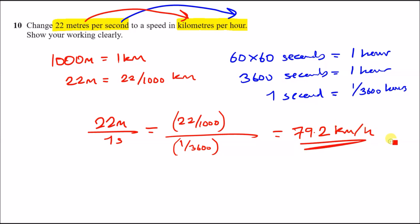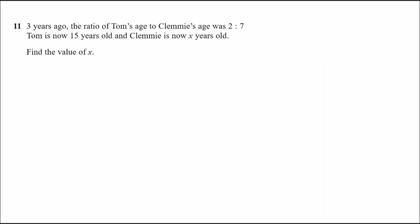Question 11: three years ago, the ratio of Tom's age to Clemmy's age was 2:7. Now Tom is 15 years old and Clemmy is x years old. We need to go back three years using the information from both statements.